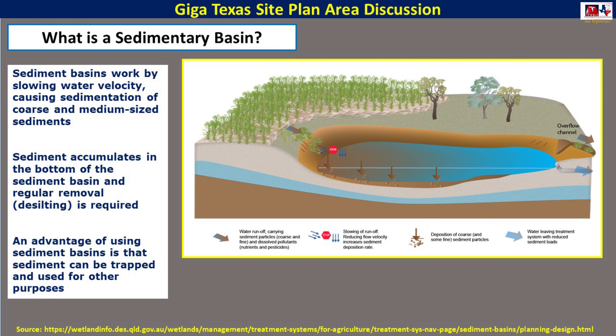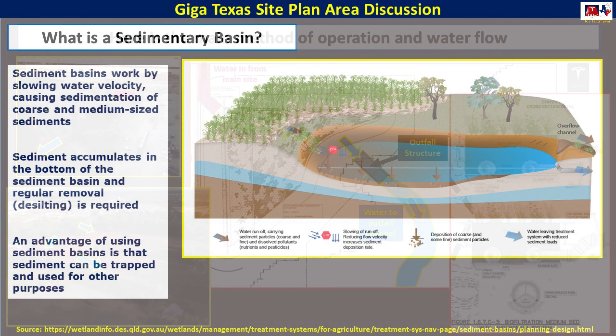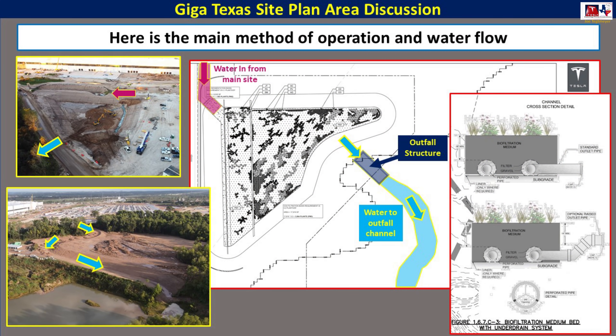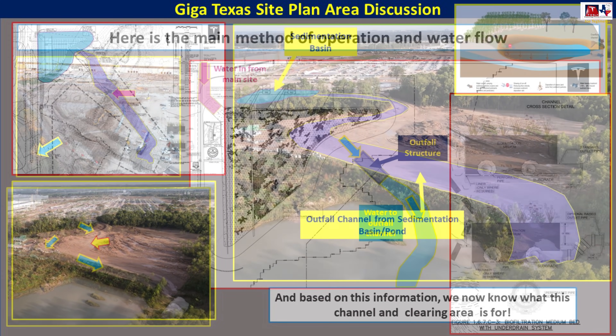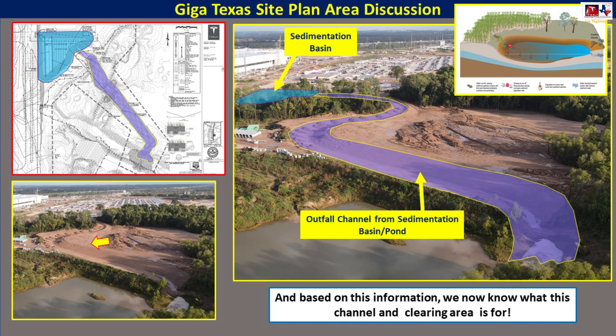The link in the video description gives you more information. Using an excerpt from the site plan and two recent photos, this is how the water flow will operate. The water comes in from the main site in the upper left-hand corner of the pink area, flows out through the outfall structure, and then follows the water outfall channel to the south. Here are a few more images that expand on that overall area, showing where the sedimentation basin and outflow channel is and how it operates.